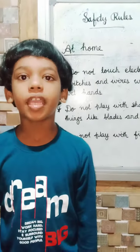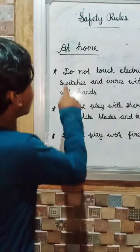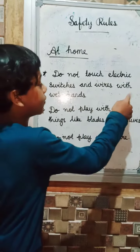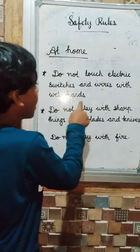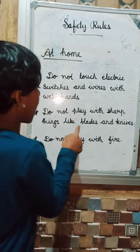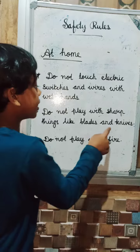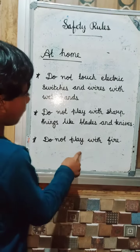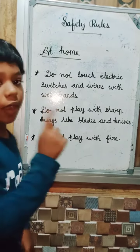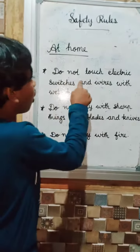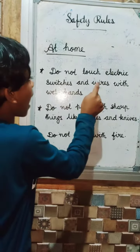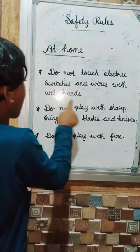Safety rules at home: Do not touch electric switches and wires with wet hands. Do not play with sharp things like a blade and knife.